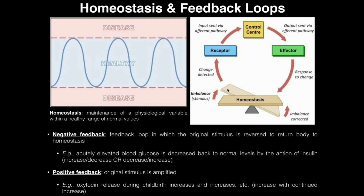To reiterate: if we get out of homeostasis, whatever variable changes is detected. The information is sent to a control center, and the control center sends information out to some effector — something that is able to respond to the change and return the imbalance back to homeostasis. The most common type of feedback loop is negative feedback. Negative feedback is a feedback loop in which the original stimulus is reversed to return the body to homeostasis.